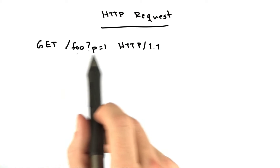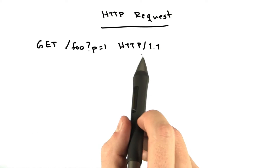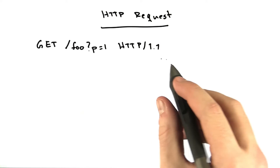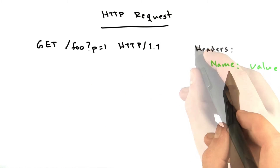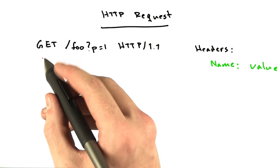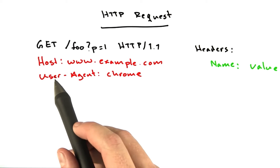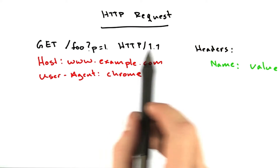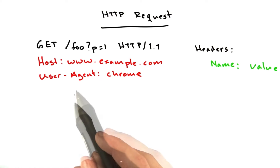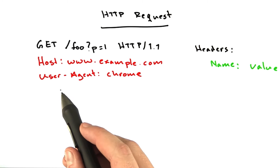We had a request line that looks something like this. It is followed by a number of headers. Headers have this format: name, colon, space, value. When you make a request, all of this is sent at once — the request line followed by a number of headers. These aren't the only headers that are sent, but these are some of the more popular ones.